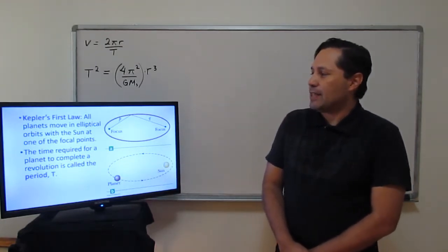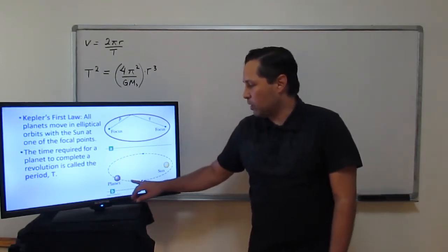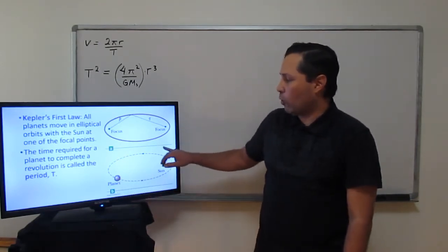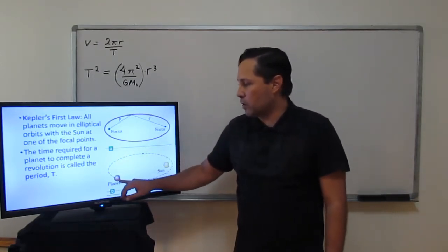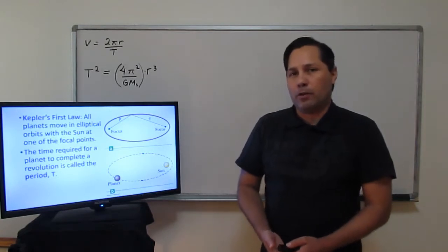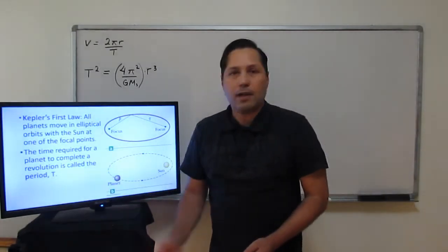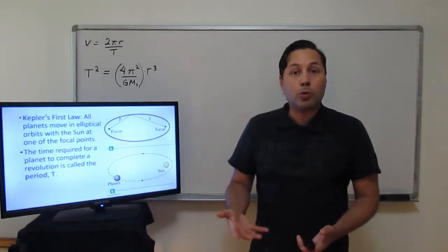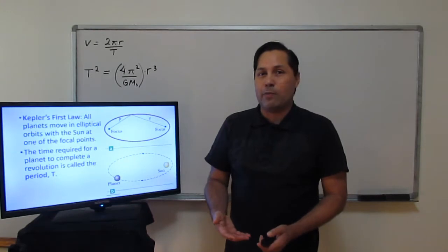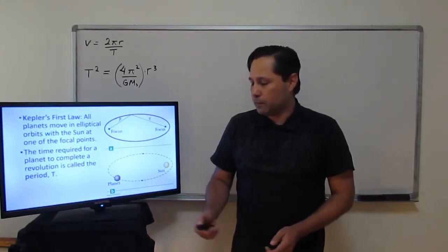The time it requires a planet to complete one orbit around the sun is referred to as the period. The symbol for period is uppercase T, not to be confused with time, which is lowercase t.